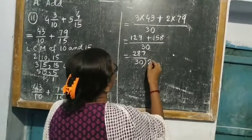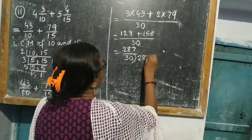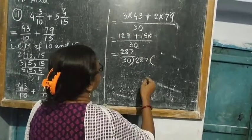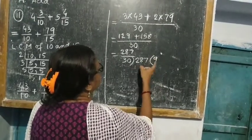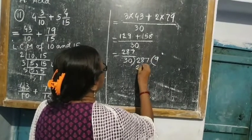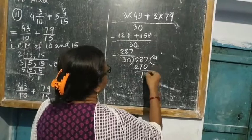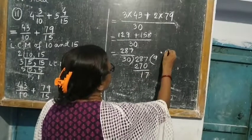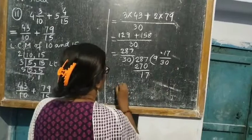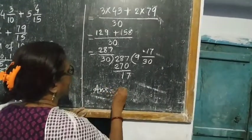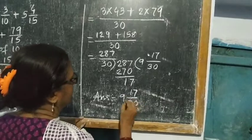Now you divide because the numerator is greater than the denominator. 30 into 287: 9 thirtys are 270, so quotient is 9, and 287 minus 270 is 17. So 17 will come in the numerator and 30 in the denominator. So the answer is 9 17/30.